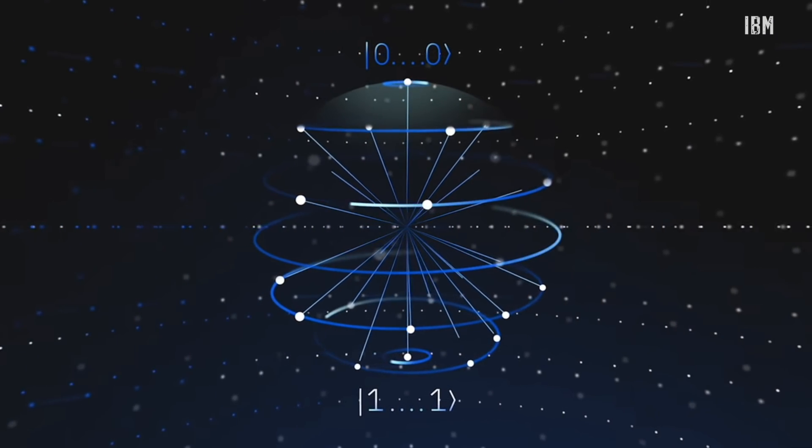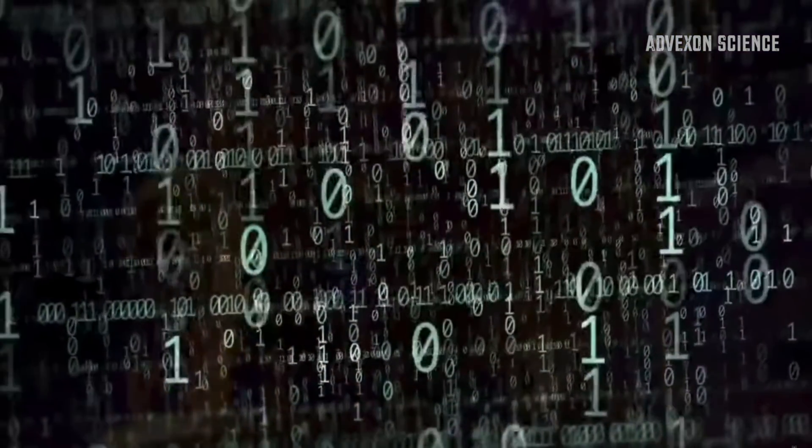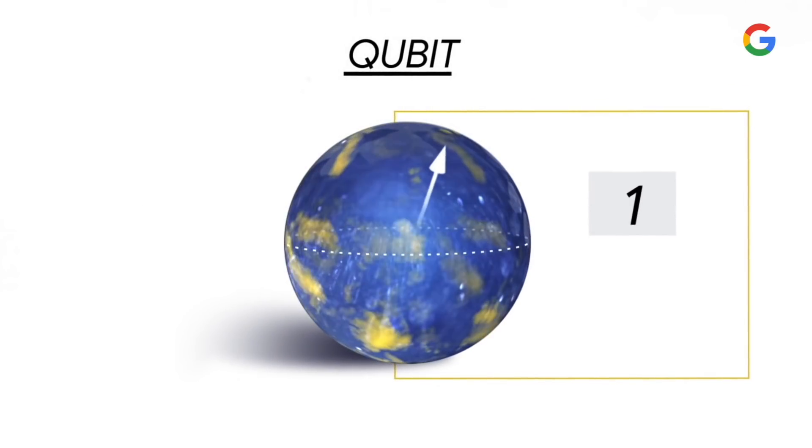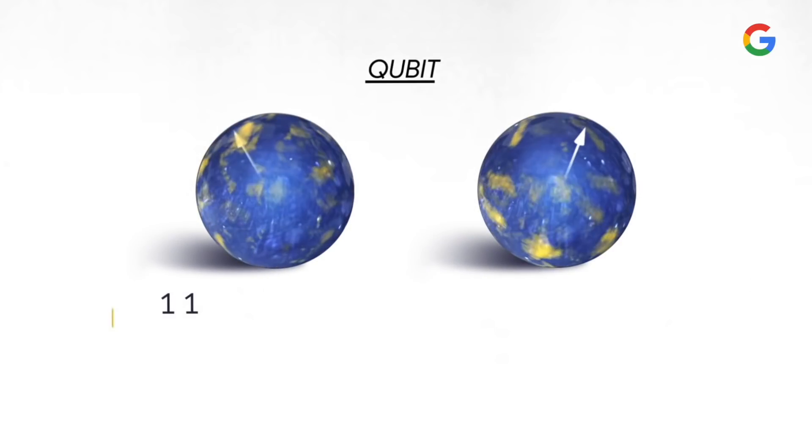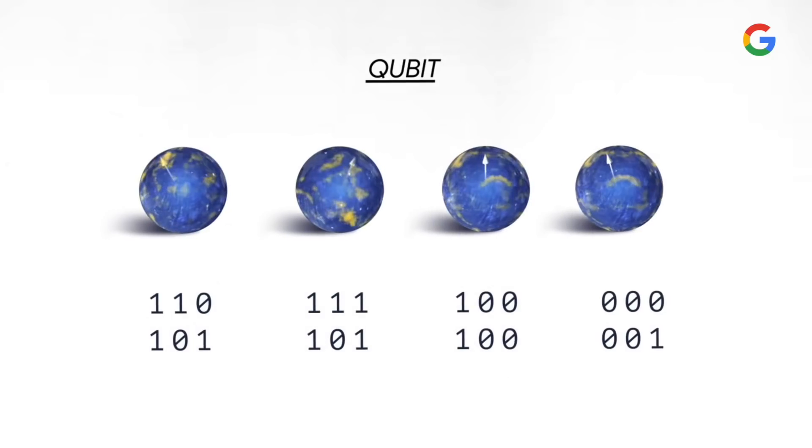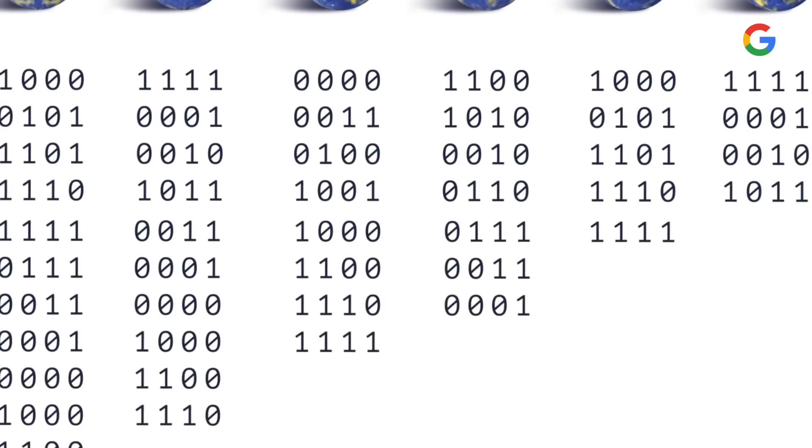You probably know the qubit is basically the quantum equivalent of the classical bit that you have in classical computers. But the very key difference, very fascinating, is that the classical bit can only be in one of two states, either zero or one. It's like a switch. But the qubit can be in superposition of states, which means that it can be like zero and one at the same time.